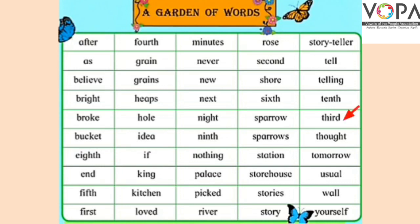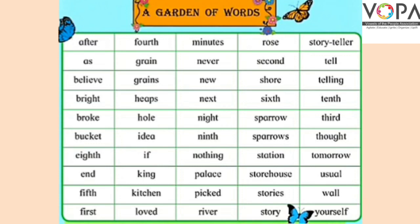'Third' — ordinal form of three. 'Thought' — T, H, O, U, G, H, T. Thought یعنی سوچنا۔ 'Tomorrow' — T, O, M, O, R, R, O, W. Tomorrow یعنی آنے والا کل۔ 'Usual' — U, S, U, A, L. 'Wall' — W, A, L, L. Wall یعنی دیوار۔ اور last میں ہے 'Yourself' — Y, O, U, R, S, E, L, F. Yourself یعنی خود سے۔